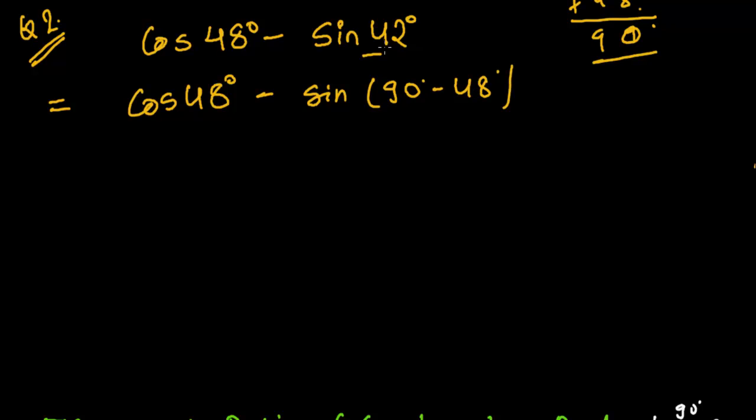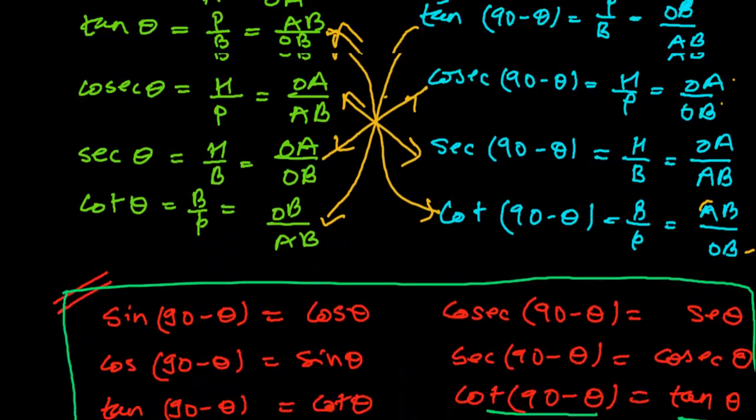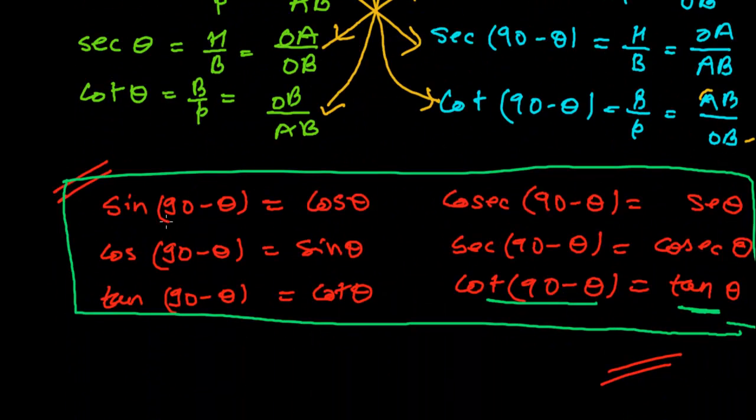sin 42° can be written as sin(90° - 48°), because 90° minus 48° is 42°. If 48° is theta, then see what we learned recently: sin(90° - θ) is cos θ.